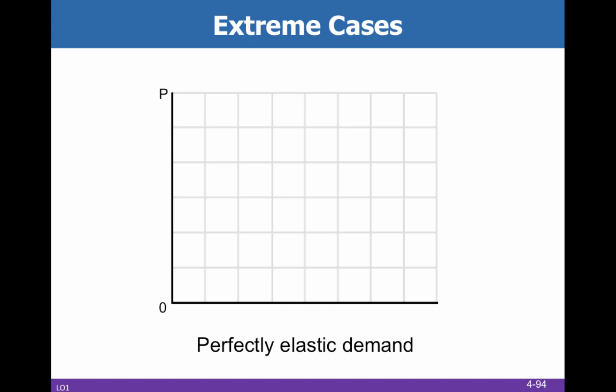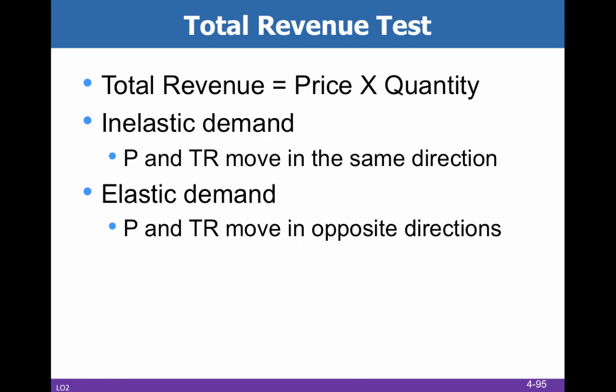We're going to use the total revenue test to help figure this out. If you don't need to find the coefficient, this helps, and it makes a lot of intuitive sense. If we have inelastic demand, then price and total revenue move in the same direction — when price goes up, total revenue goes up. But if it's elastic demand, when price goes up, total revenue goes down. Businesses have an incentive to lower their price because they'll sell so many more units that the extra units will overcome the decreased revenue per unit.